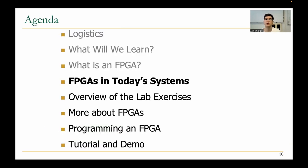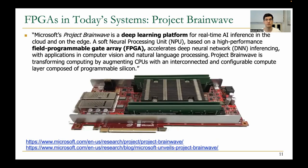Now we will look at where exactly FPGAs are used in today's systems. Here's an example deep learning platform that Microsoft developed for enabling real-time machine learning inference in cloud computers. Microsoft used the FPGA to implement a neural processing unit that accelerates deep neural network inference tasks, and they're using it for computer vision and language processing.